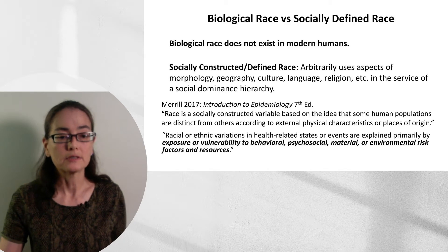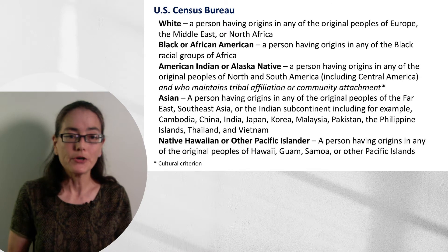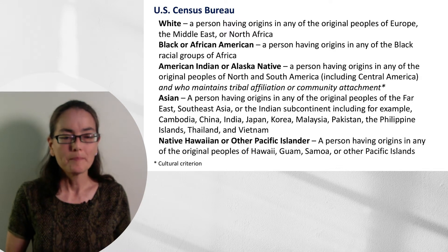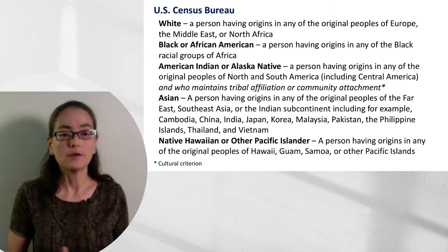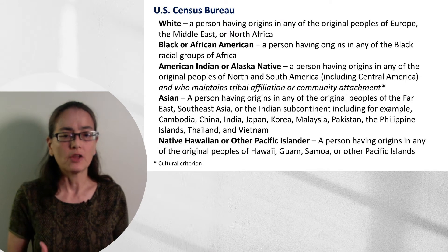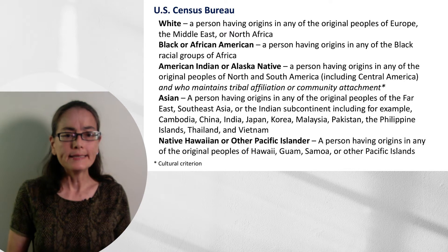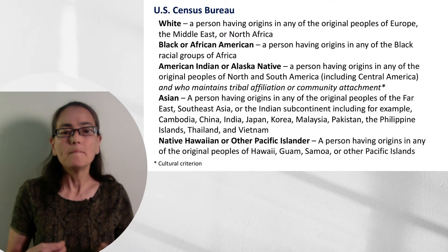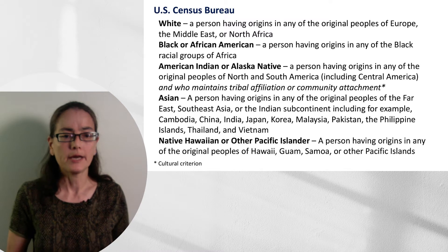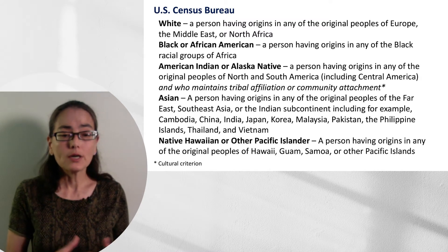Jumping forward 200 years, this is what the U.S. Census Bureau gives us, and these definitions are incredibly problematic. For example, the definition of white has changed and shifted through history. Black or African American is defined as a person having origins in any of the black racial groups of Africa, despite the fact that there is more genetic variation in Africa than in any other population. The category American Indian or Alaska Native includes a cultural criterion — tribal affiliation or community attachment — so race can shift based on one's affiliation.